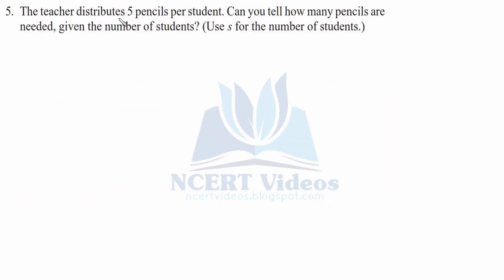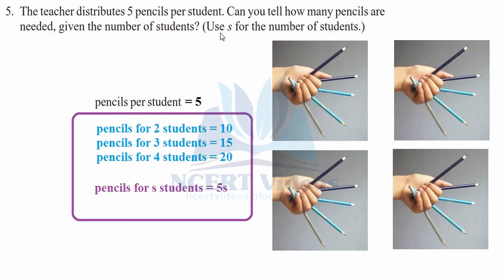Question 5: The teacher distributes 5 pencils per student. Can you tell how many pencils are needed, given the number of students? Use S for the number of students. This diagram shows that each student gets 5 of them. So if you have 4 students, they will get 5 times 4, which is 20. Now, pencils per student is 5. If there are 2 students, they will get 5 plus 5, which is 10 pencils.